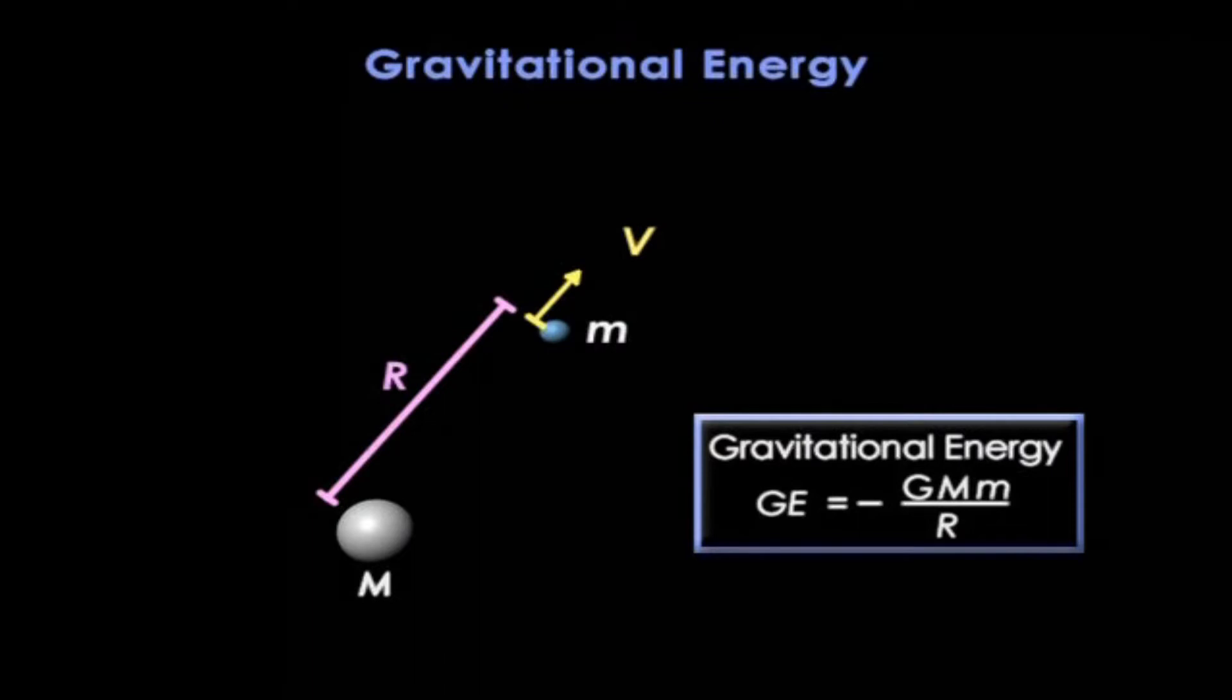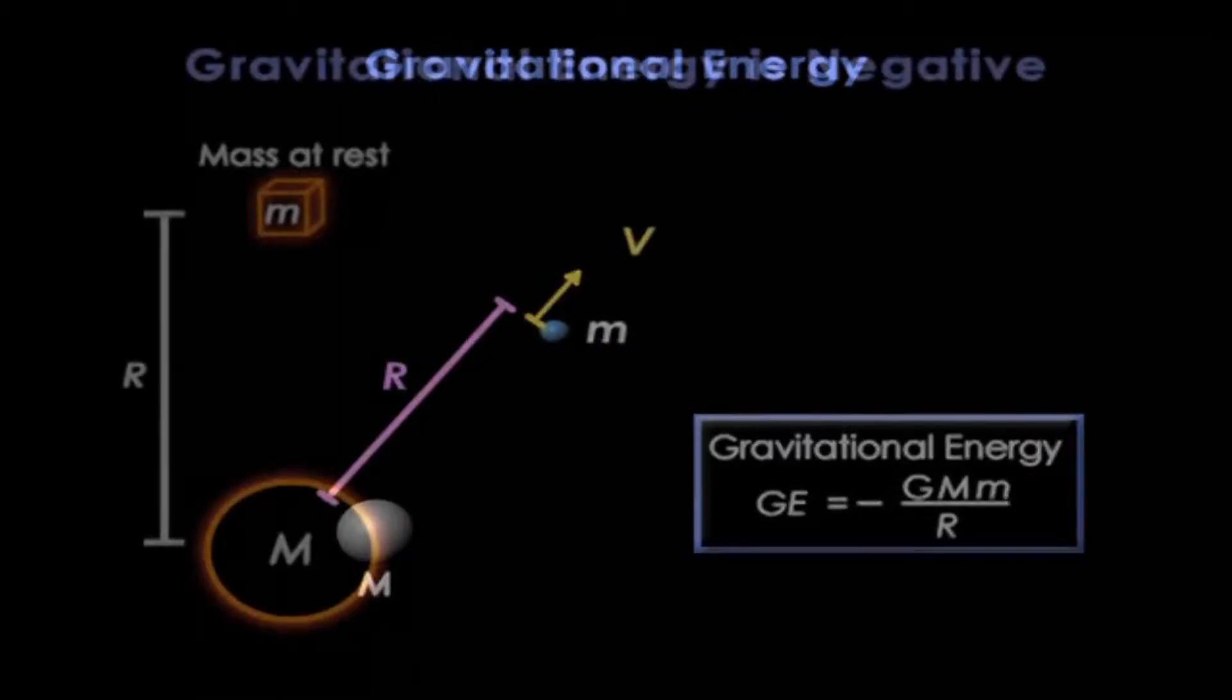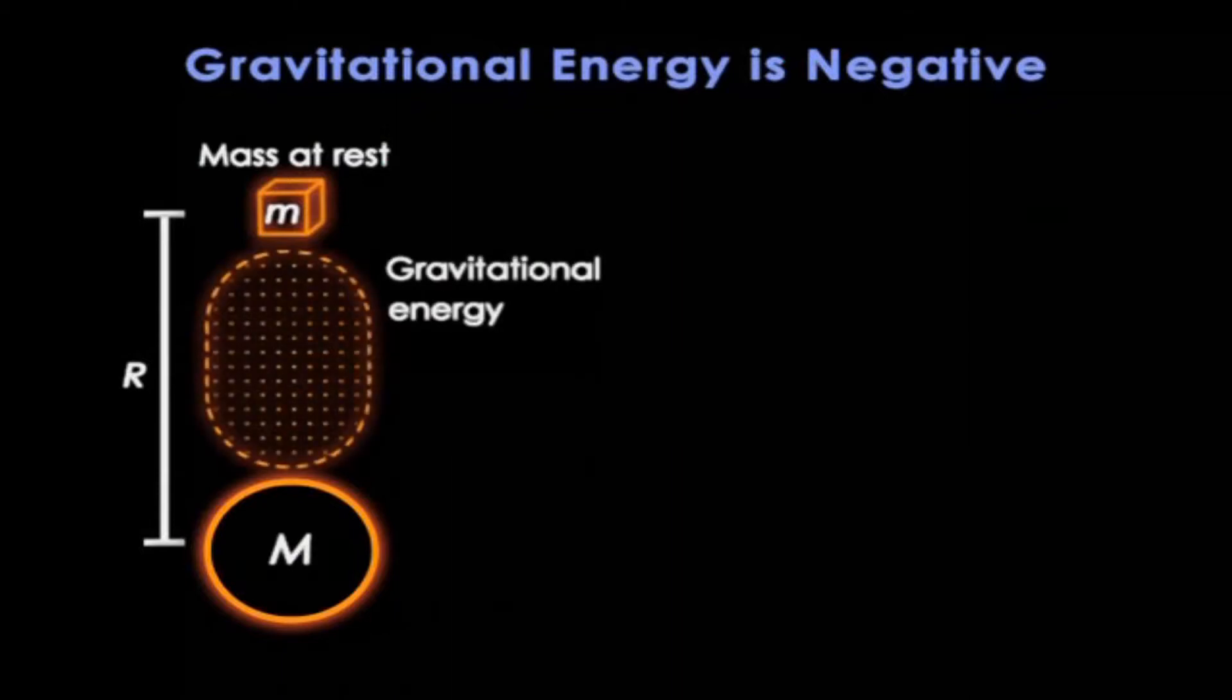Now, it is very important to notice that the gravitational energy is negative. So let's see why that is. Start with a mass at rest some distance from a larger mass. There is energy between the two where both objects' gravitational fields interact. Now let go of the mass.